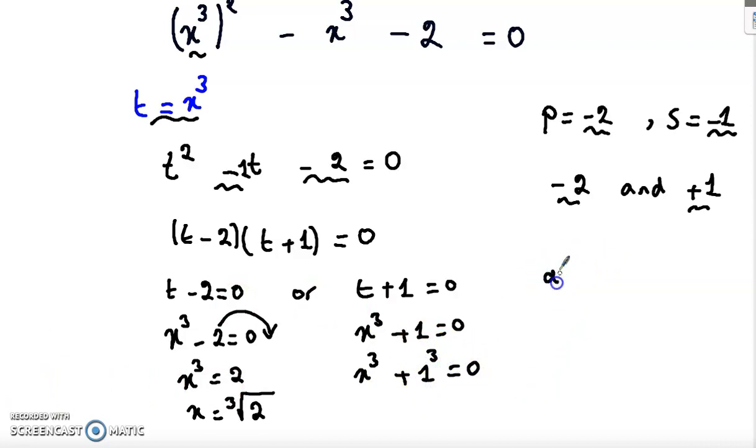This equals a plus b multiplied by a squared minus ab plus b squared. So let's factorize it. It equals x plus 1 multiplied by x squared minus x plus 1 equals 0.